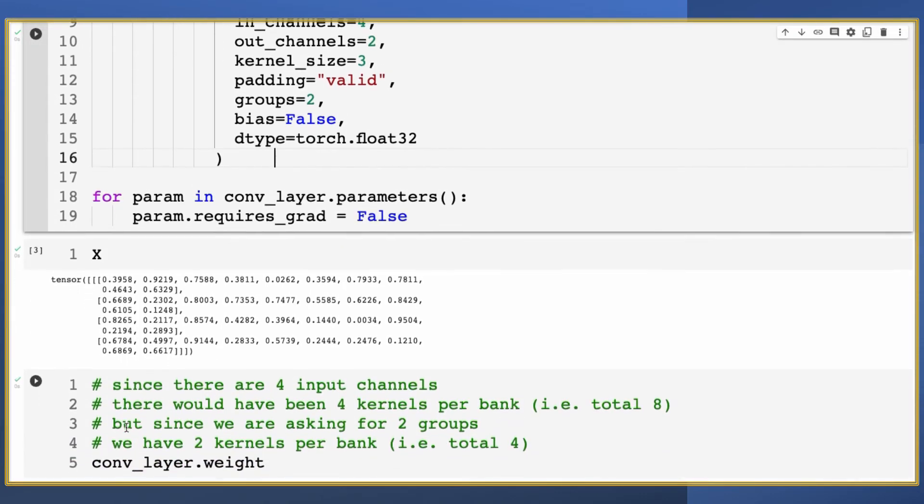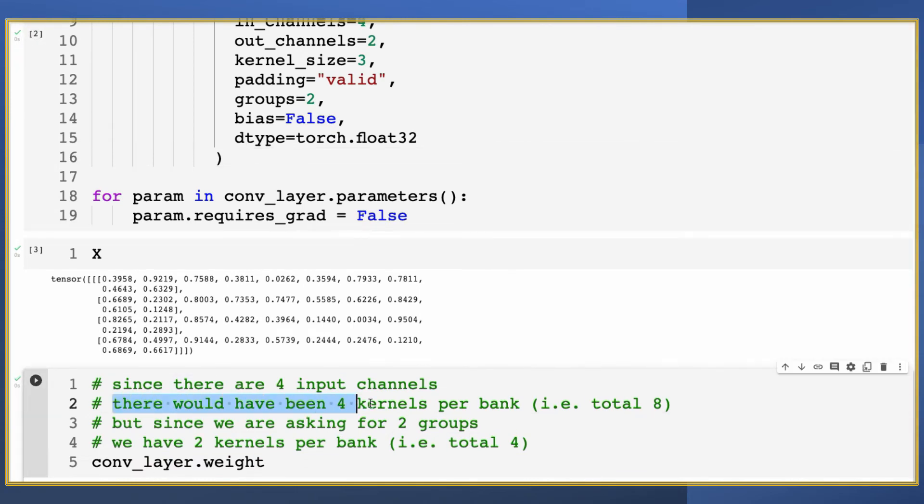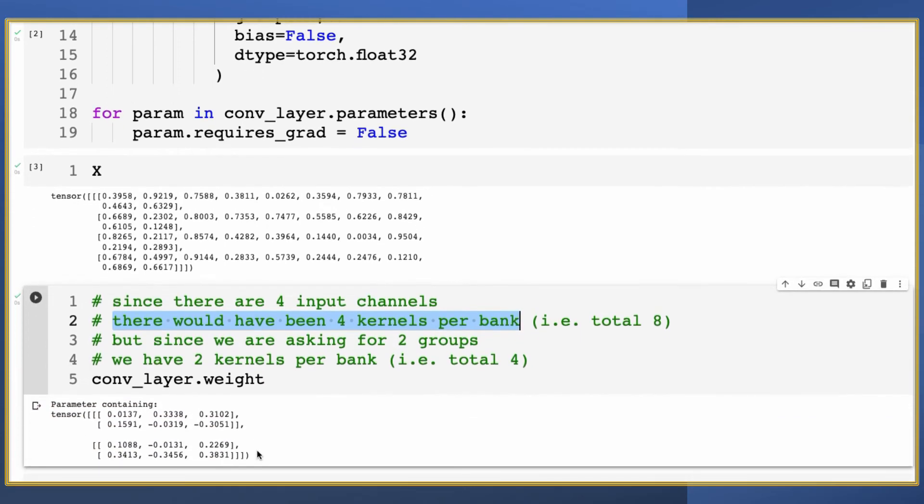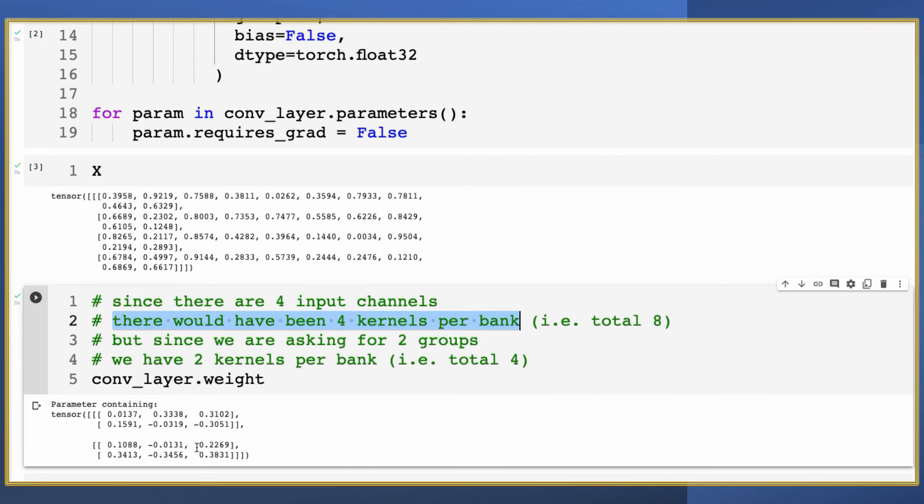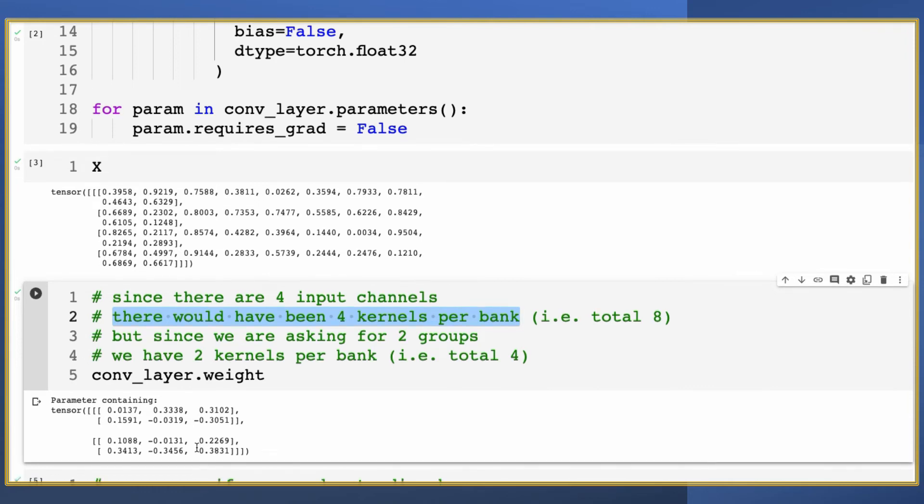Now, normally for every input channel, you would have a corresponding kernel, that is four kernels per bank in this case, but as I showed you in the visualization earlier by using groups, we would have two kernels per bank and you can see it is the case here. The weights in the convolution layer now only have four entries for kernels.